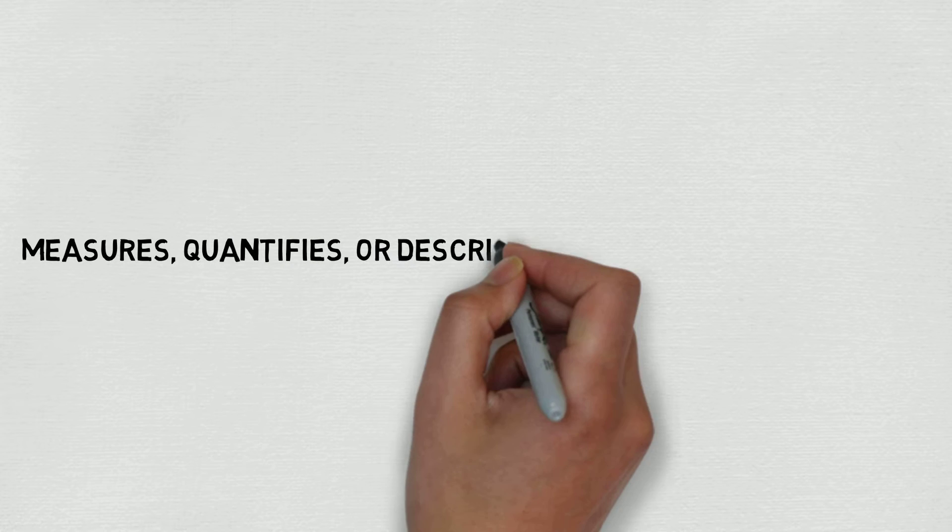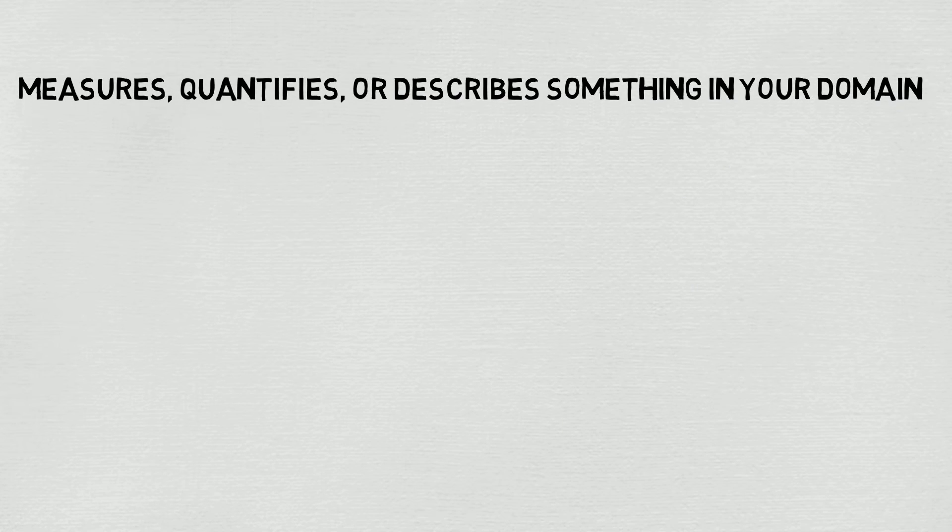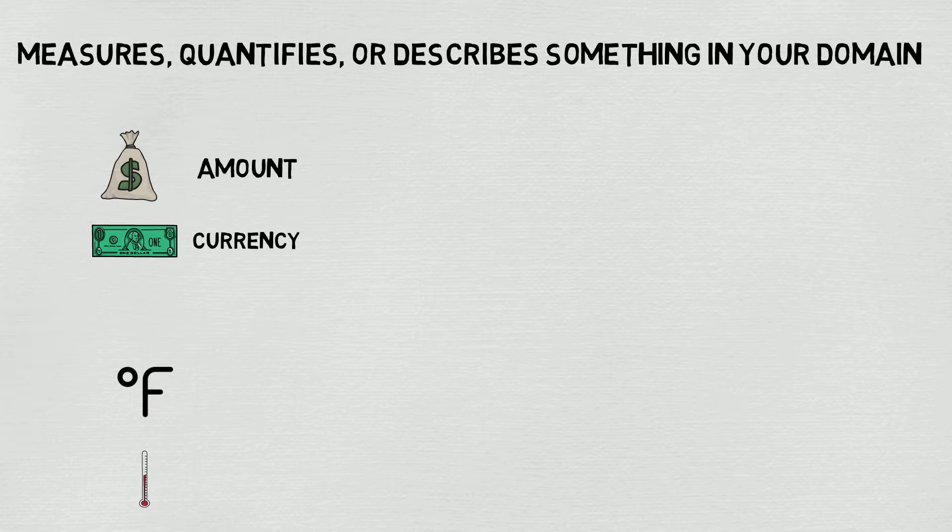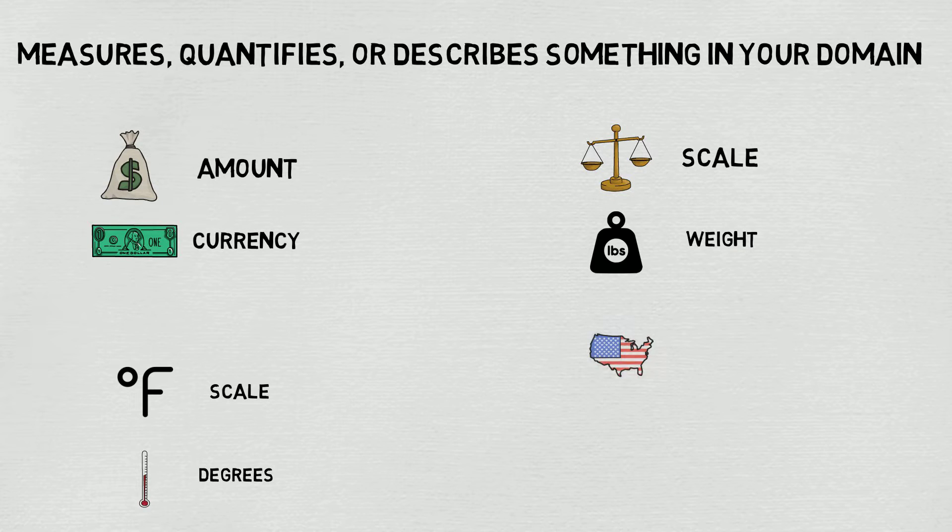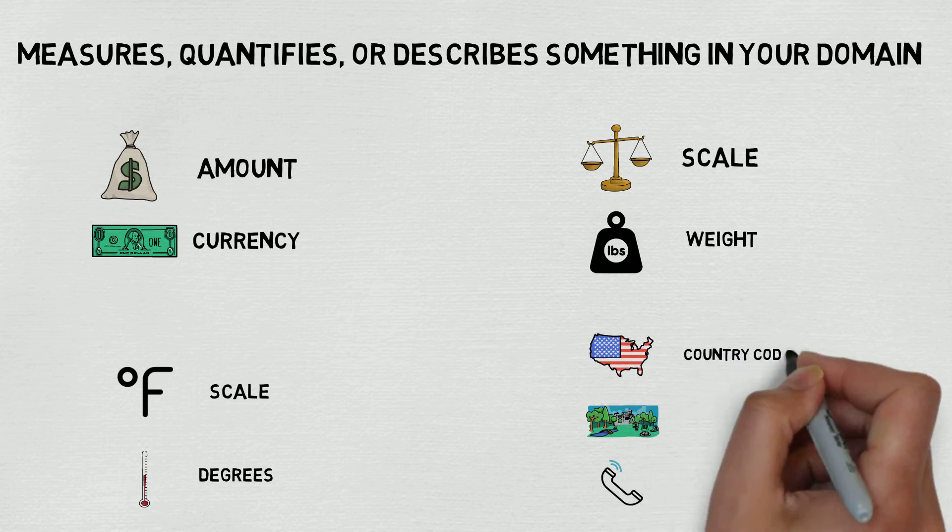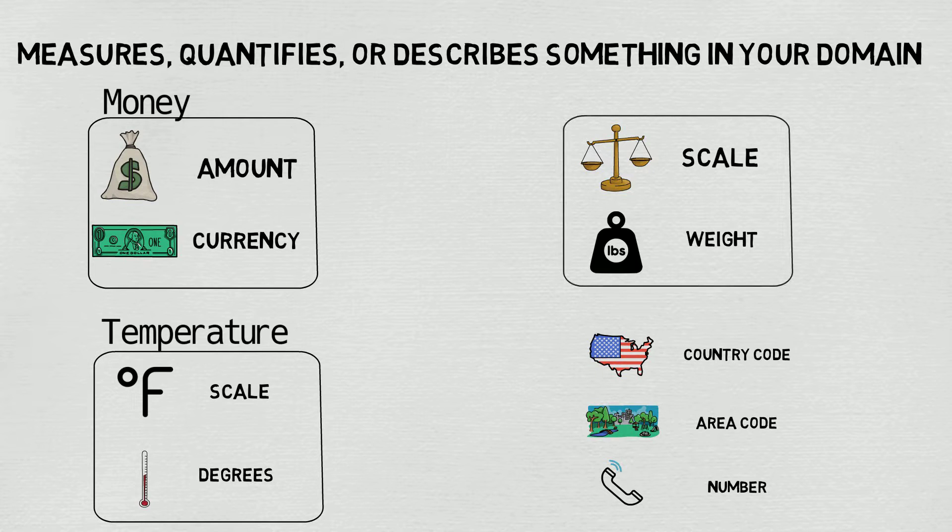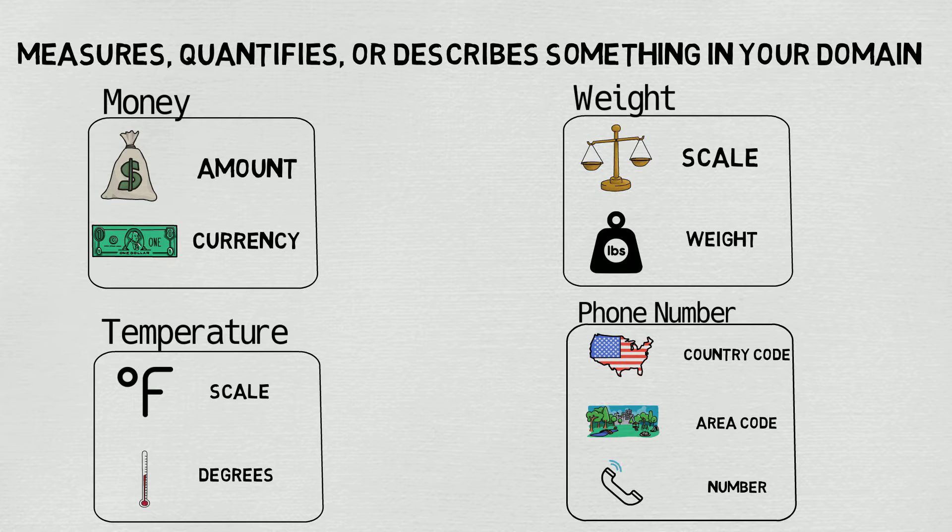So let's take a look at the first principle. It measures, quantifies, or describes something in your domain. Oftentimes, when you're trying to measure or quantify something within your domain, you'll find that there is this common relationship of some measurement with a particular unit or scale. When you come across scenarios like these in your domain, they present great opportunities to use value objects to model them.